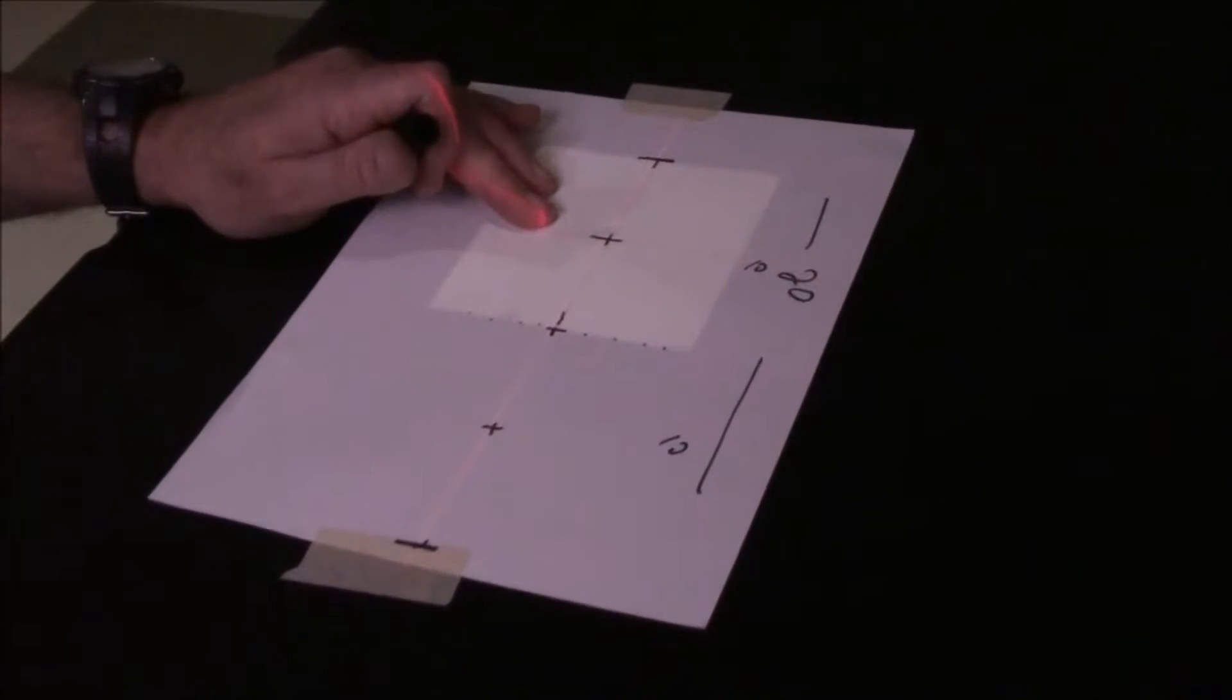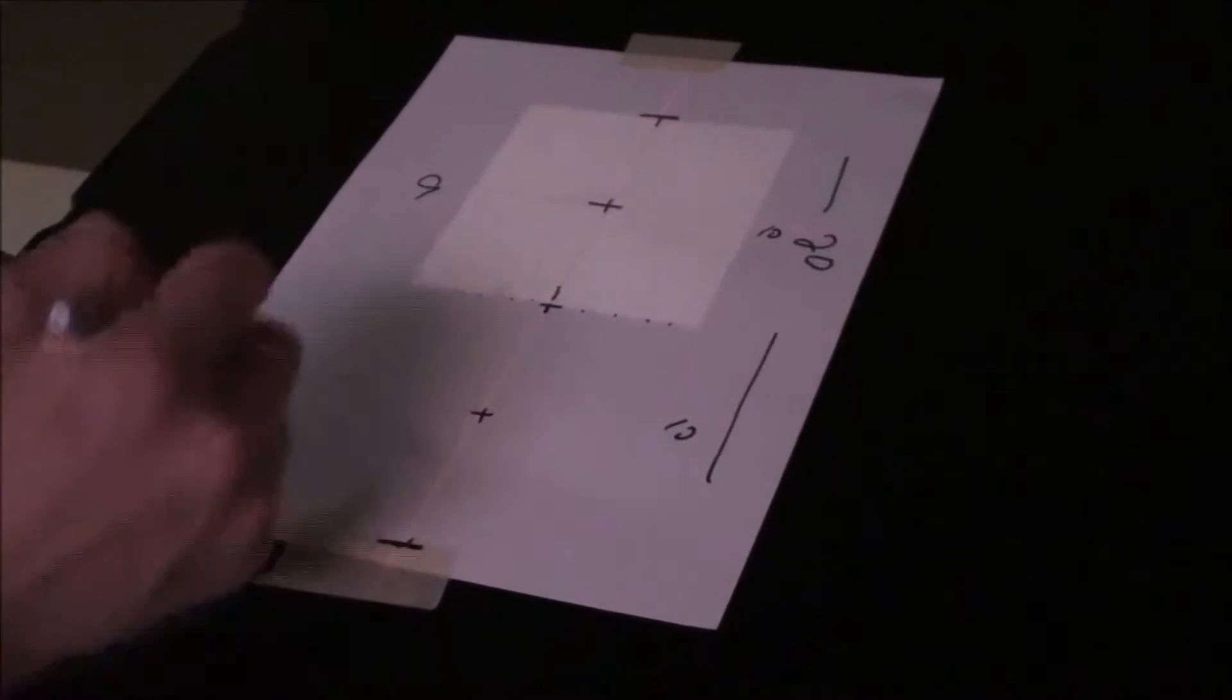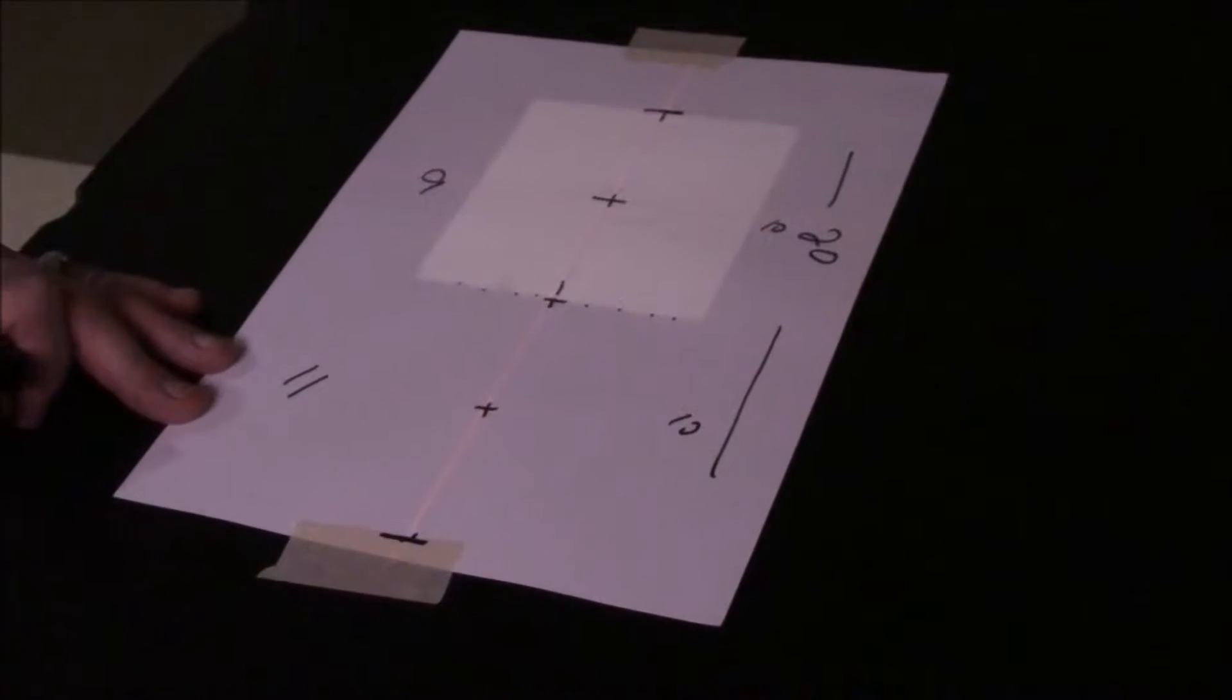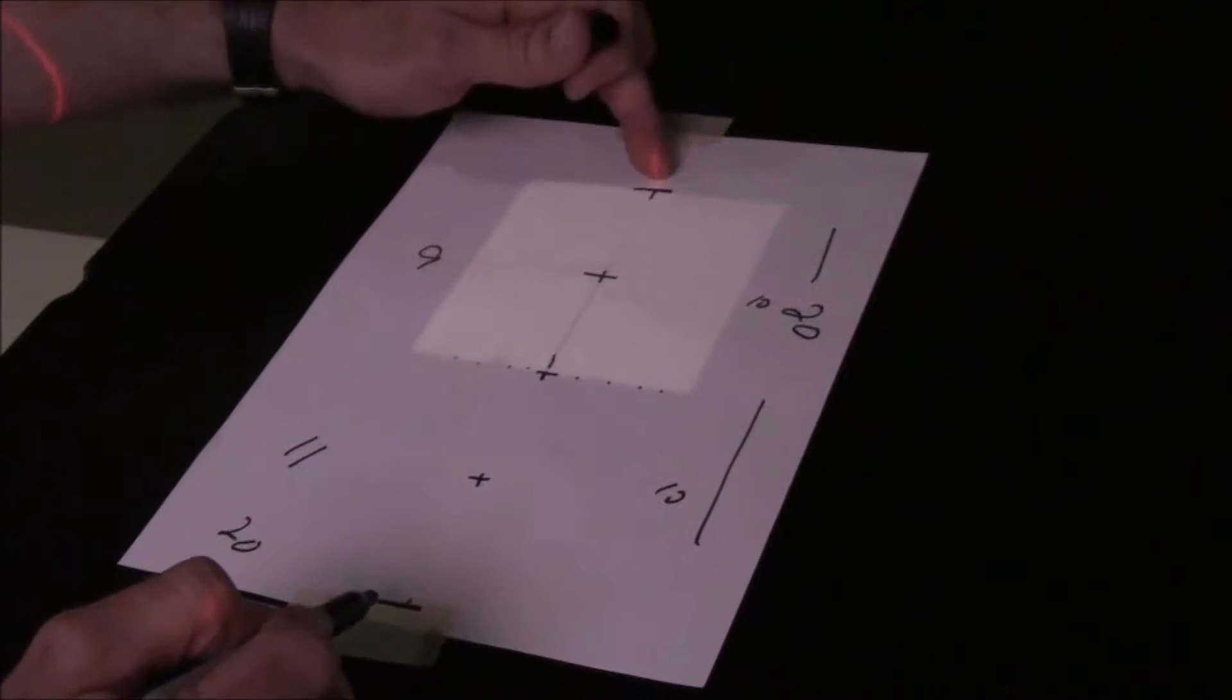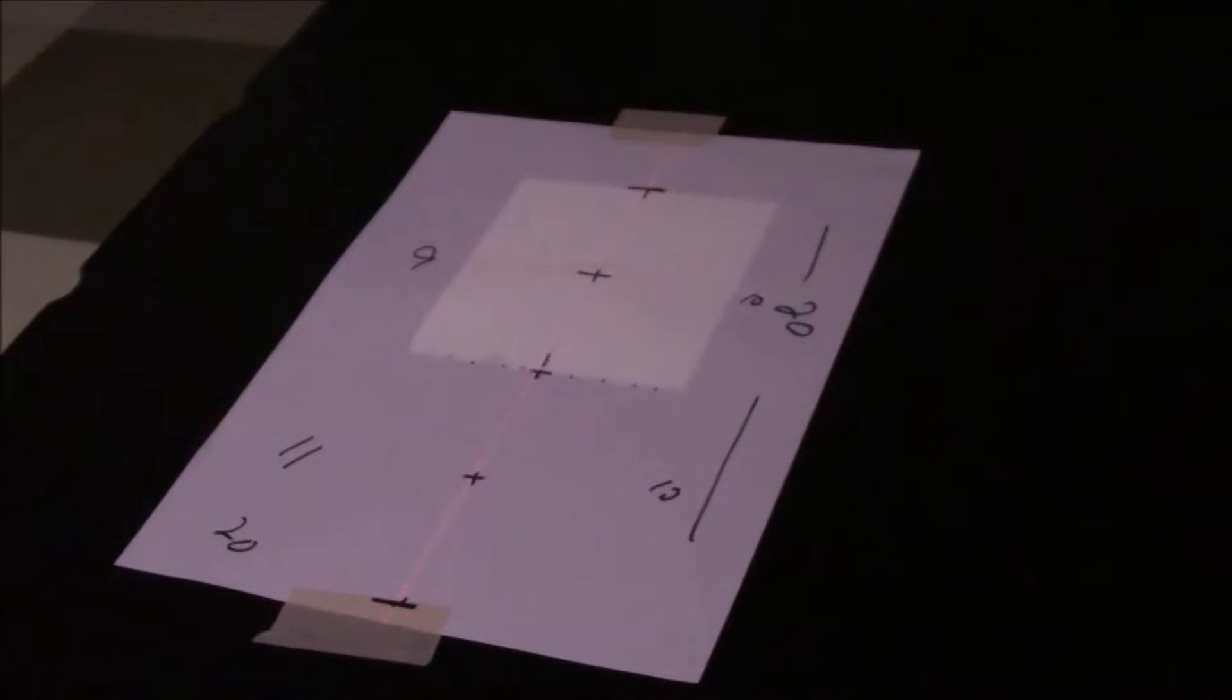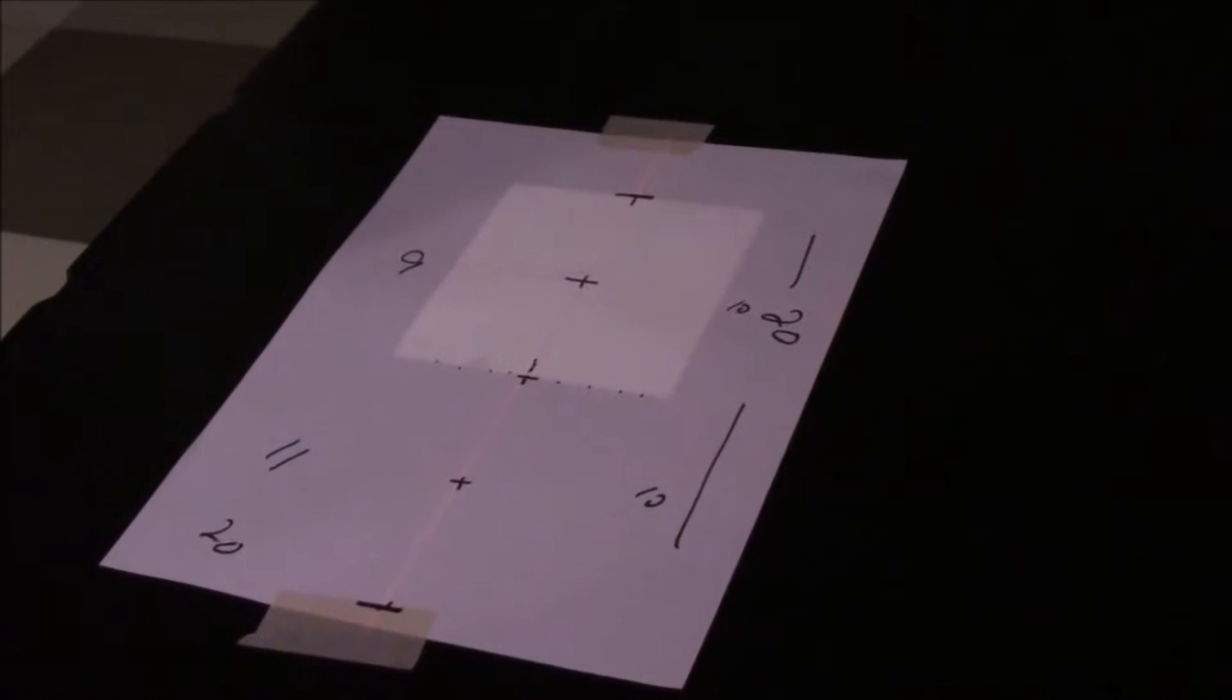We currently have 10 by 10. We're going to make the superior field 9, and we're going to make the inferior field 11, which still gives us 20 centimeters, which still means this field and this field edge will match. So I'm just going to move. The length will now become 9.